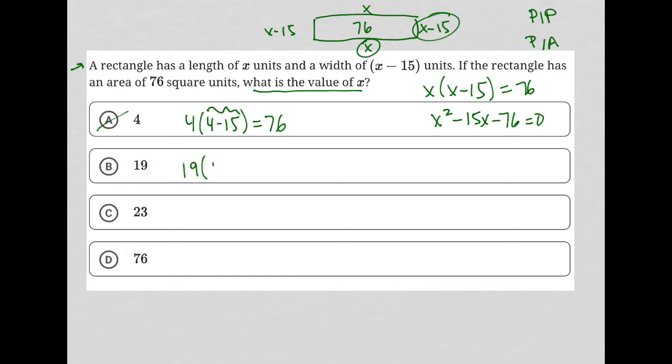Is it true that 19 times 19 minus 15? That looks pretty good, because that becomes 19 times 4. And yeah, that actually does equal 76, so our answer is choice B.